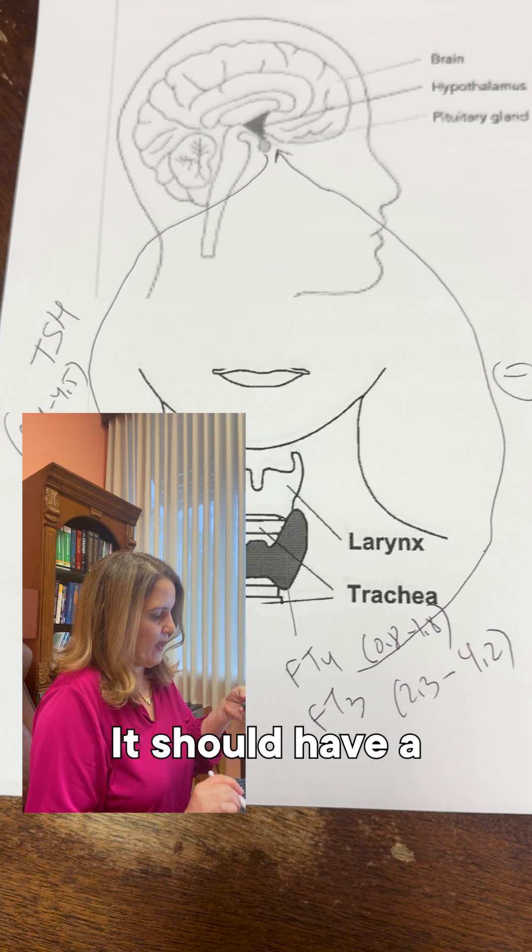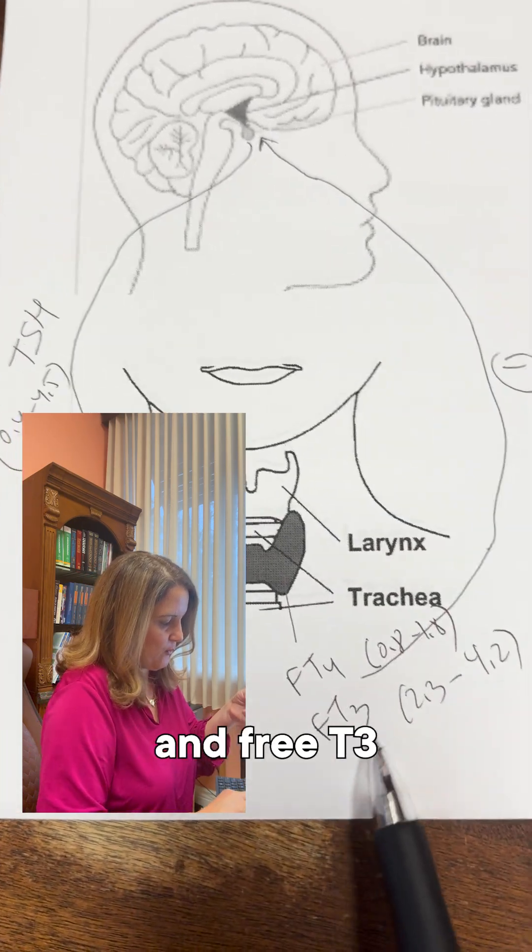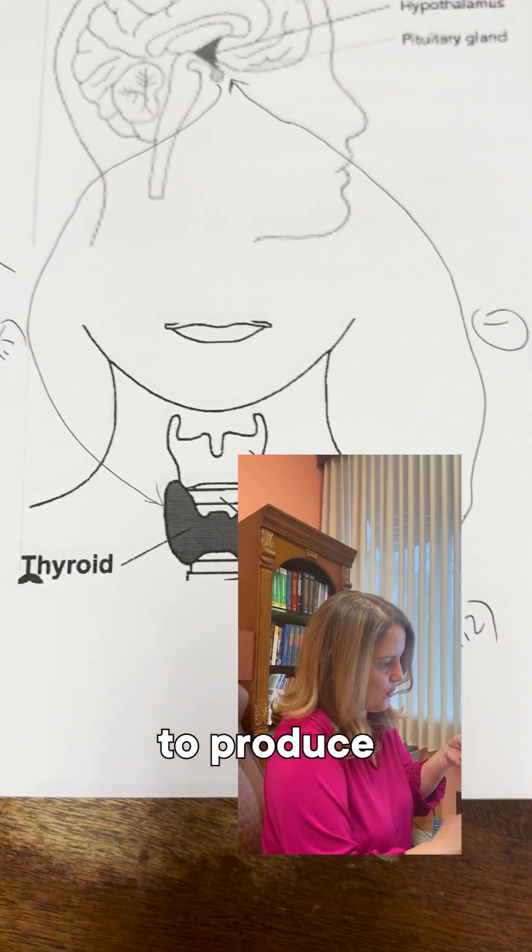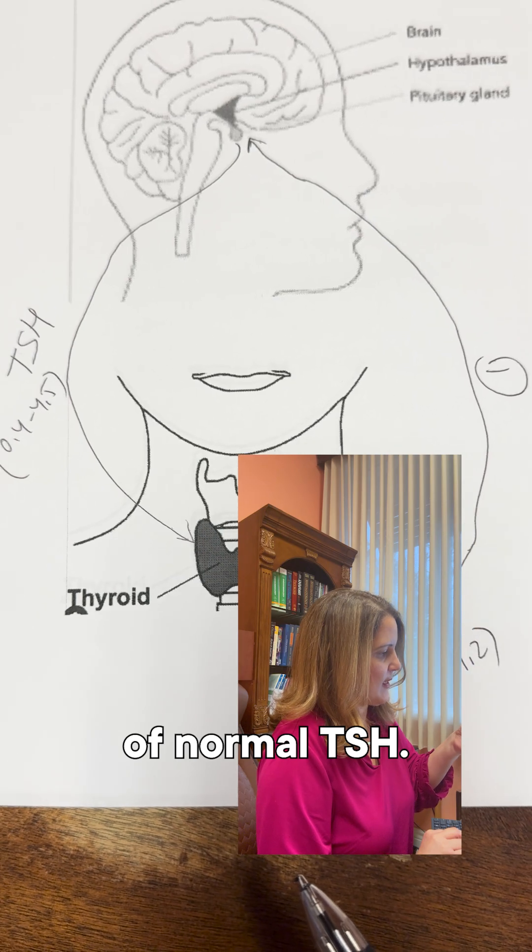So this is what happens normally. It should have negative feedback when the free T4 and free T3 are normal to continue to produce the same amount of normal TSH.